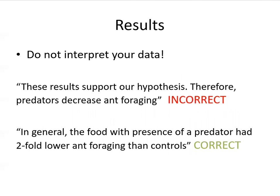Your results section is one of the more important sections in your paper because this is where you show what you found. You do not want to interpret your data — you want to completely just show and state it. An incorrect example would be: these results support our hypothesis, therefore predators decrease ant foraging. A better way to say that would be: in general, the food with presence of a predator had twofold lower ant foraging than controls.